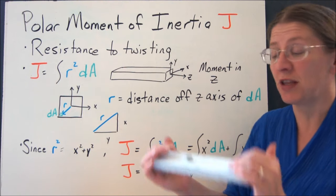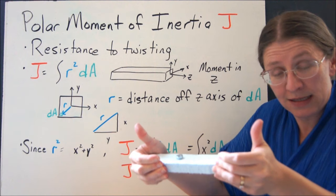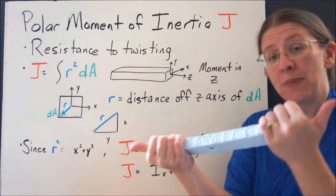So we've talked about the area moments of inertia that measure resistance to bending about the x-axis and about the y-axis, but there are three axes in 3-D. We also have moments about the z-axis.